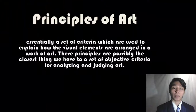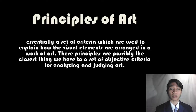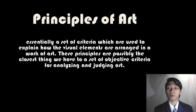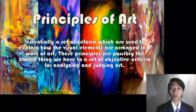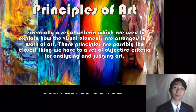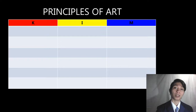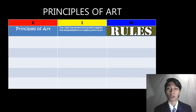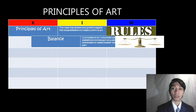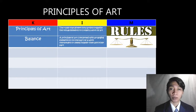In summary, the principles of art are essentially a set of criteria used to explain how the visual elements are arranged in a work of art. These principles are possibly the closest thing we have to objective criteria for analyzing and judging art. First, the principle of art is the rules that govern how art is organized using visual elements to create a work of art. Balance is the principle of art concerned with arranging elements so no one part overpowers or seems heavier than any other part.